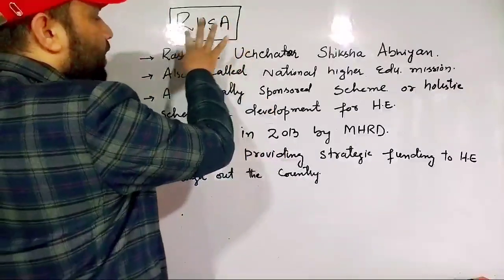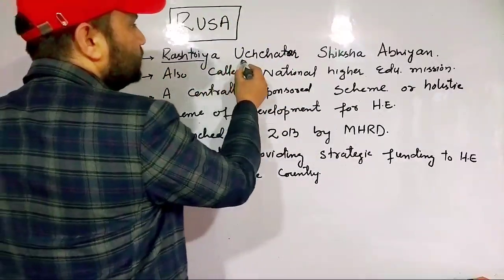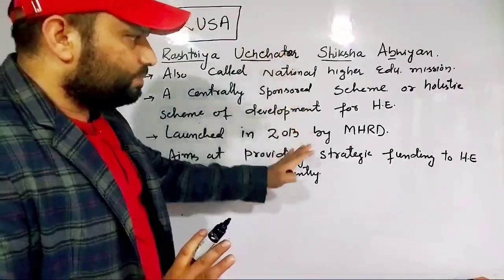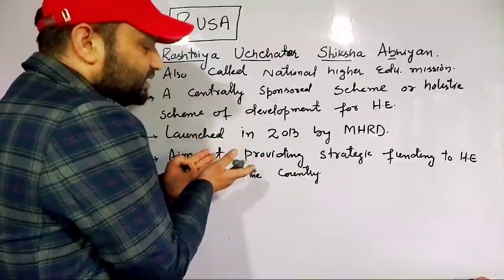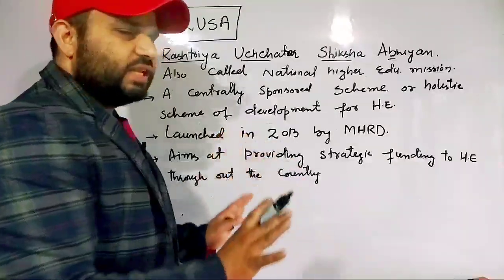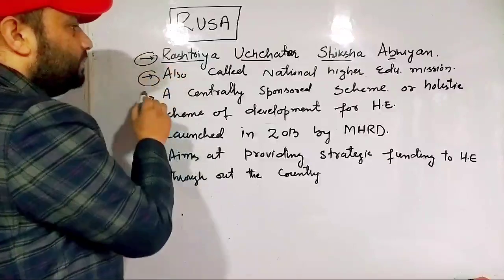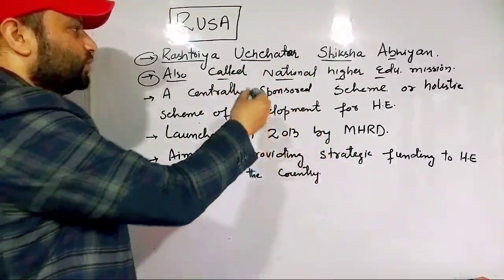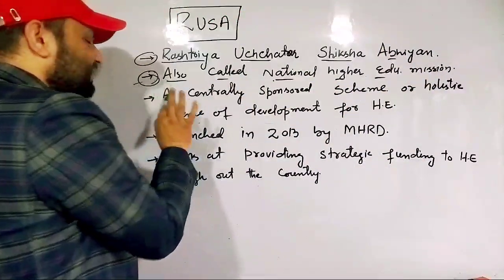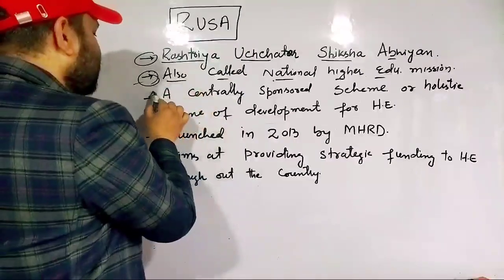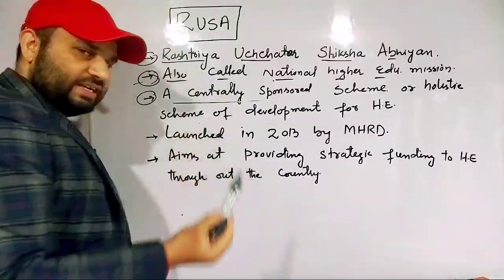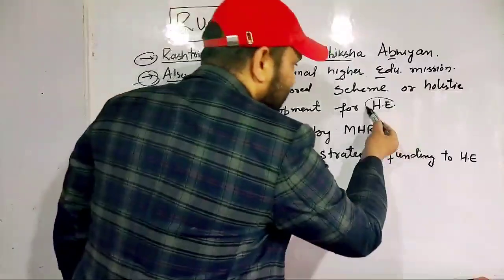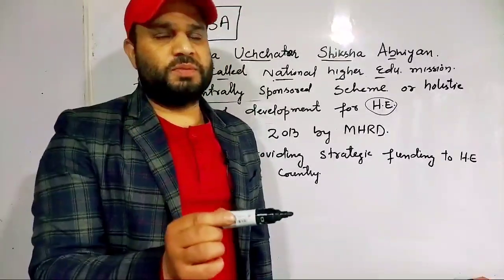RUSA — Rashtriya Uchchatar Shiksha Abhiyan. You have to write point by point. The second point is it is also called the National Higher Education Mission. Just as RAMSA is the National Secondary Education Mission, RUSA is the National Higher Education Mission. And RUSA is a centrally sponsored scheme.